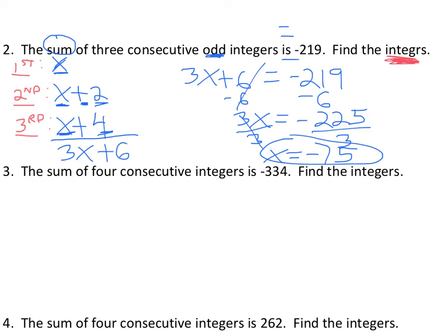Find all the integers. So negative 75, that's just the first. So plug negative 75 into the other two expressions.